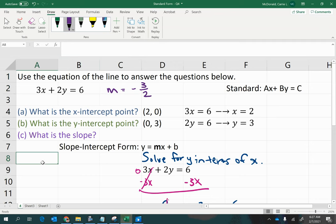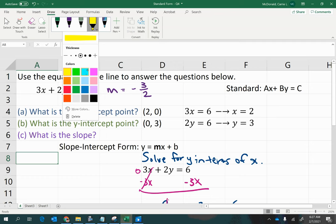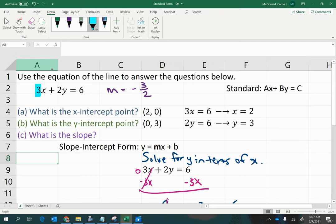Right, now notice. Let's notice a few things here. The 3 in front of the x-term is the same 3 that's on the top of this fraction for the slope.